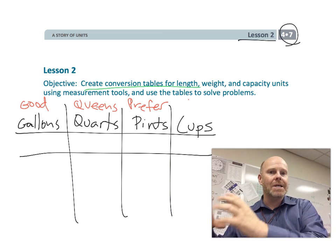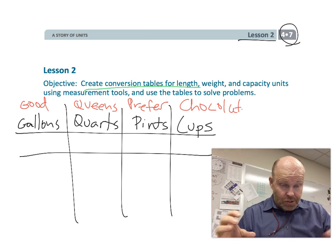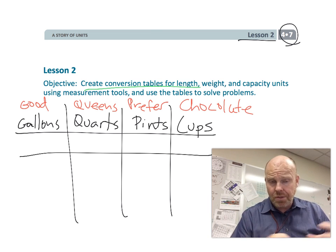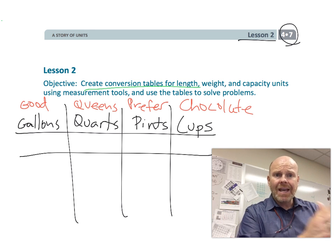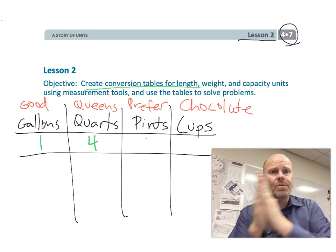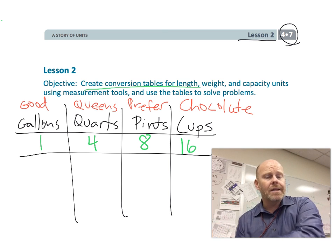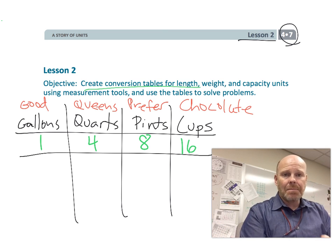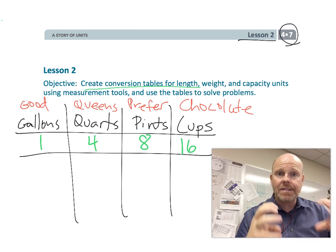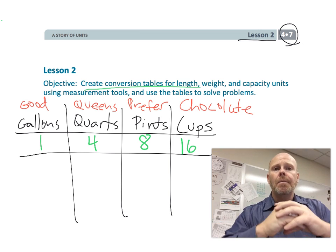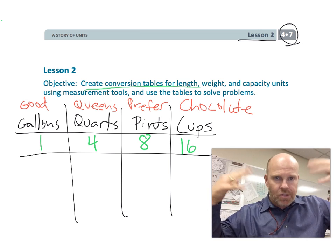You know, gallons are the biggest, and the conversion. So parents and teachers, you can help your students by giving them this table. It's one, four, eight, and 16. So one gallon is equal to four quarts. One gallon is equal to eight pints. And one gallon is equal to 16 cups. So that's the idea. That's your basic memorization. That's how you can start right there.